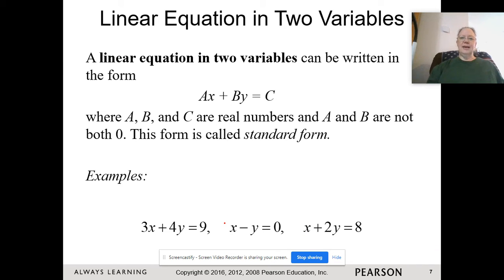In the last chapter, we did linear equations in one variable. In this chapter, we're going to be doing linear equations in two variables. Linear means our variables are to the first power, and two variables means I'm going to have an x and a y. When we have the x and y on the left-hand side, we call that standard form. So 3x plus 4y equals 9 or x minus y equals 0 are examples of linear equations in two variables in standard form.